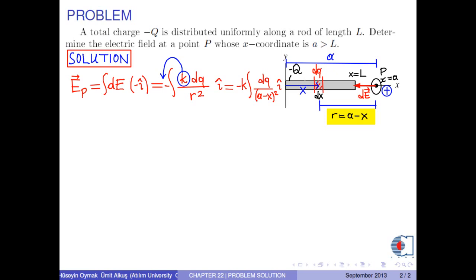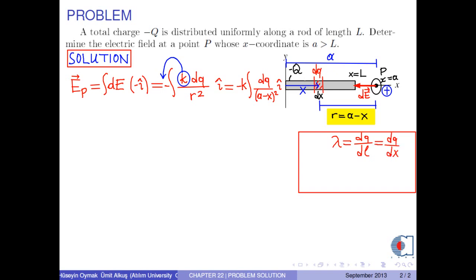In order to calculate the integral, we have to find an expression for dq in terms of x. Since the line charge density of the road is dq over dL, where dL is now dx, we have dq equals lambda times dx.